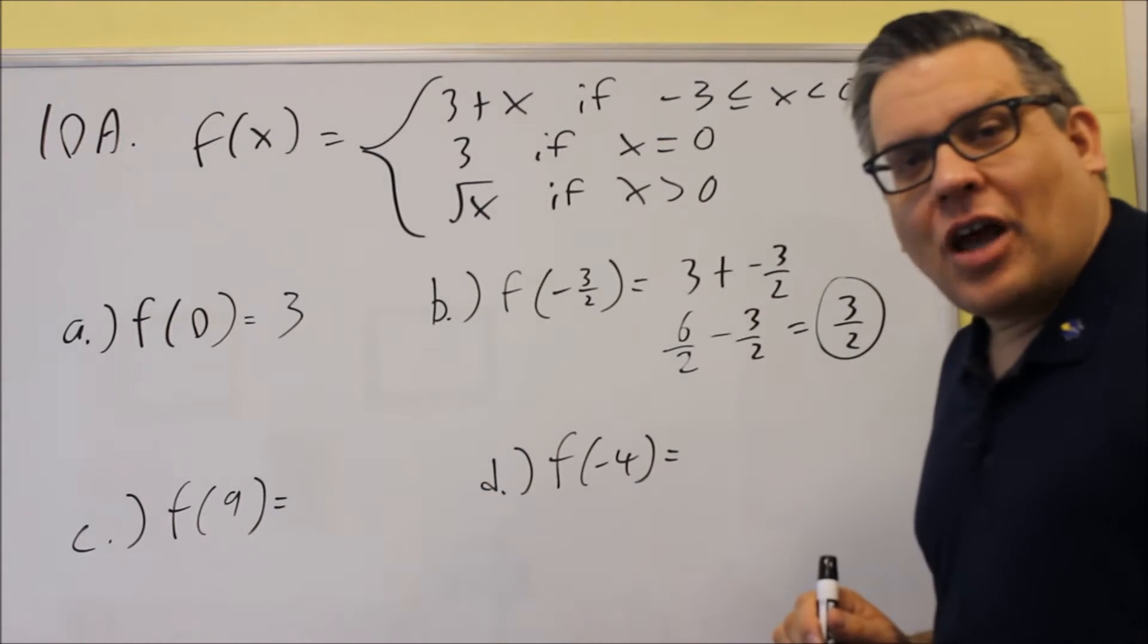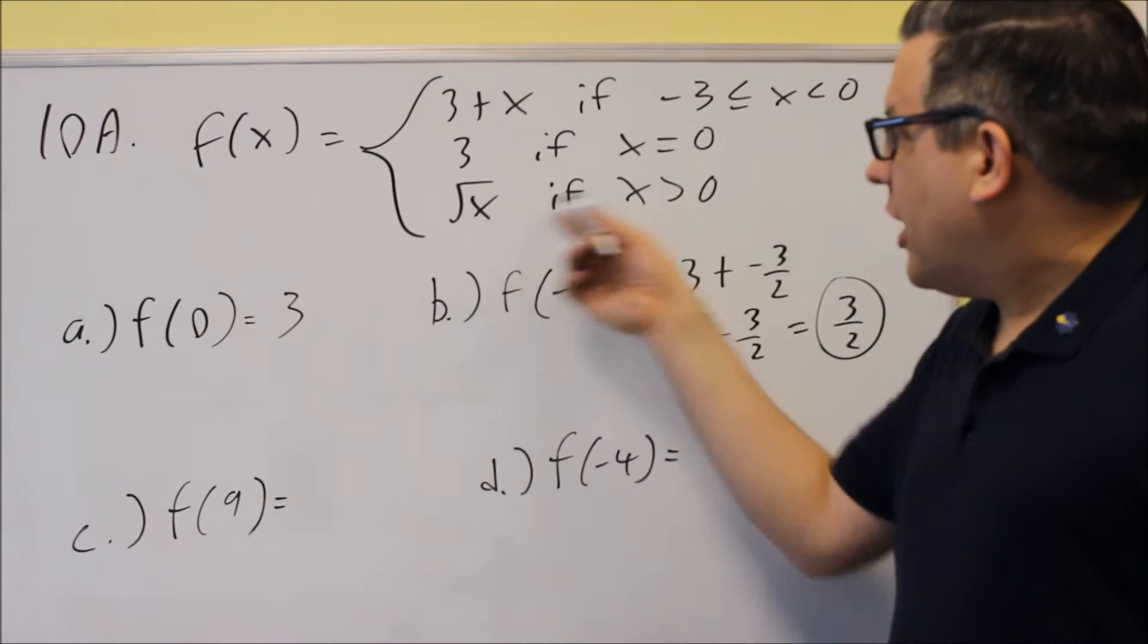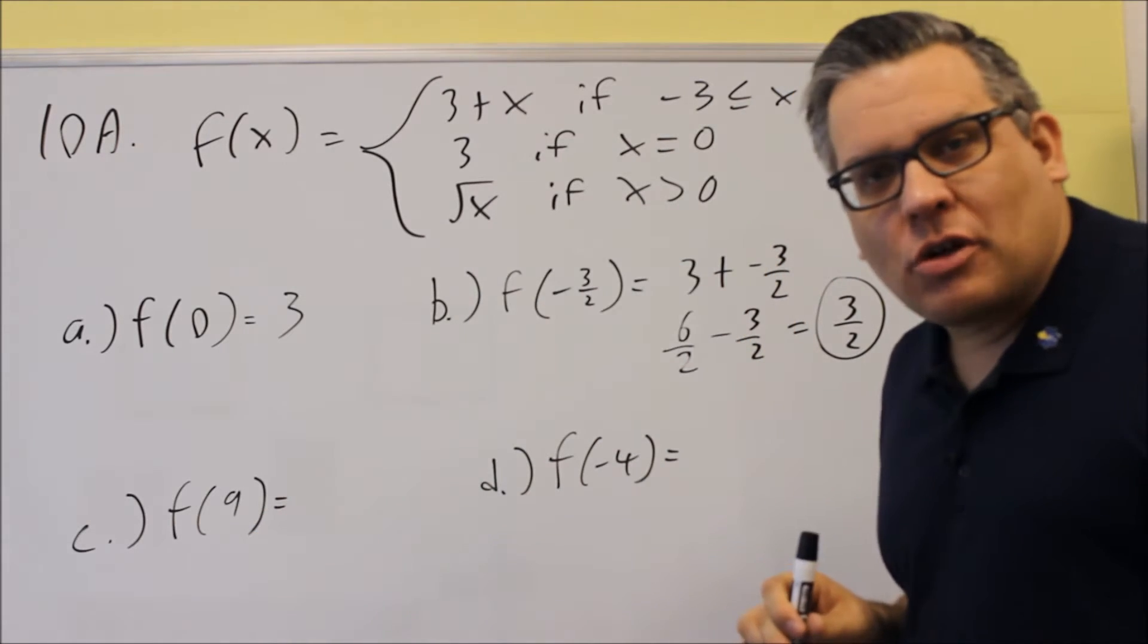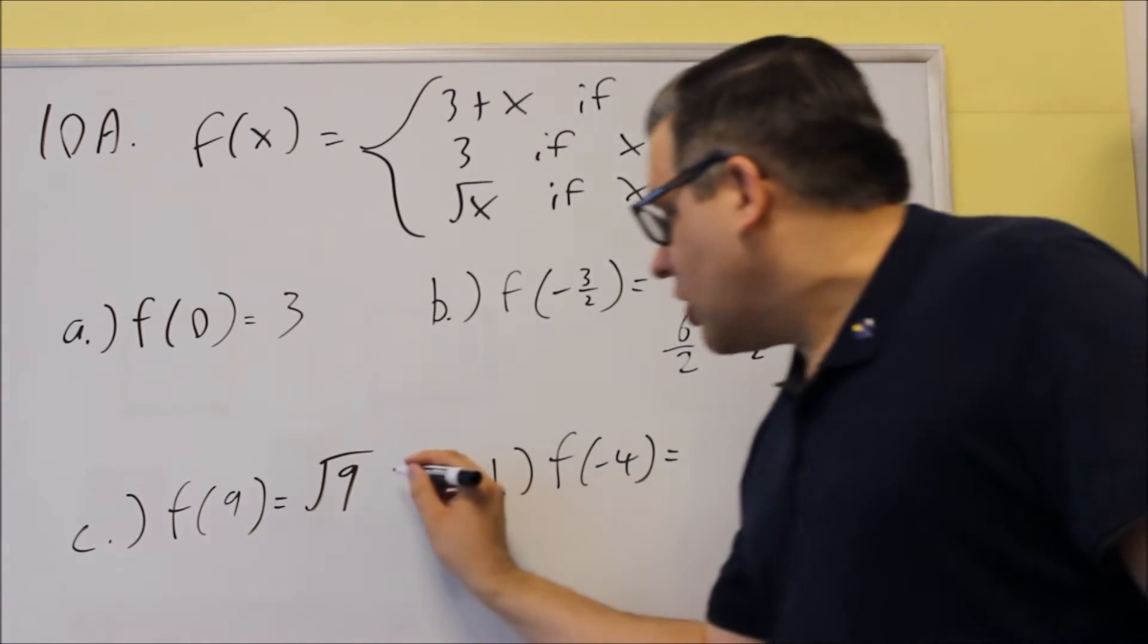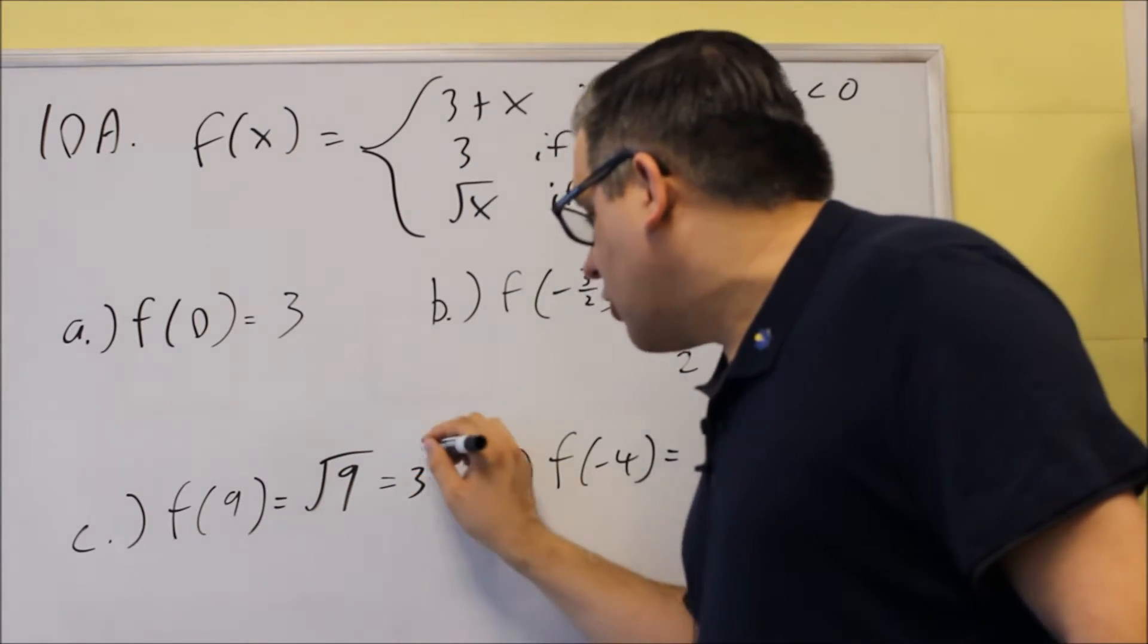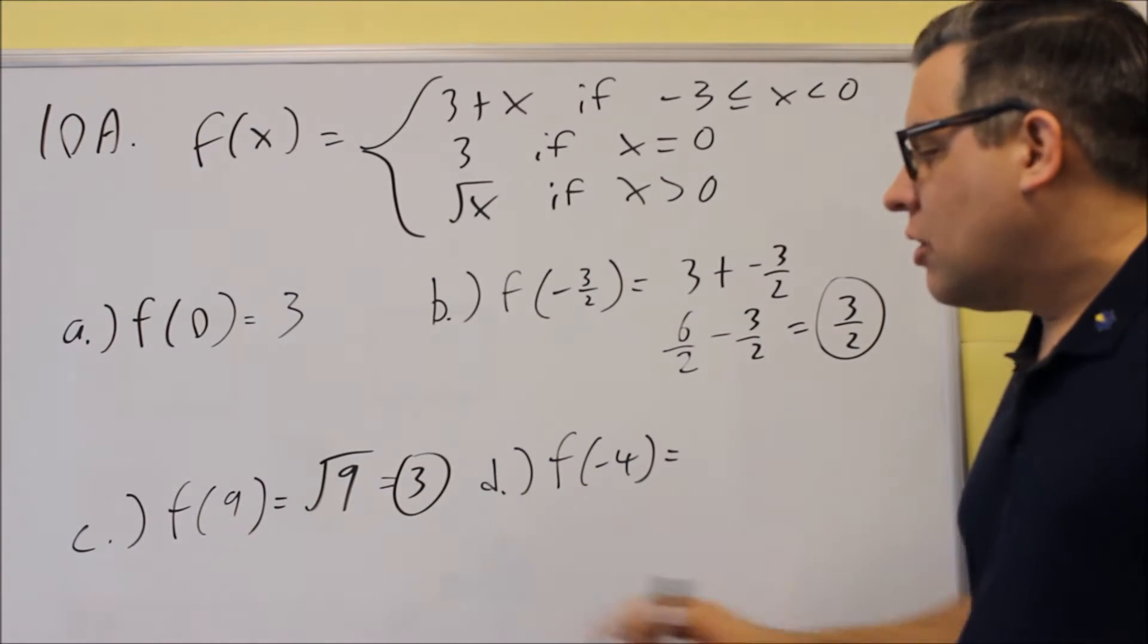Let's jump down here to 9. f of 9. 9 is greater than 0, so you would use the bottom one. That's square root of 9, which is going to give you 3. So 3 would be your answer for part C.